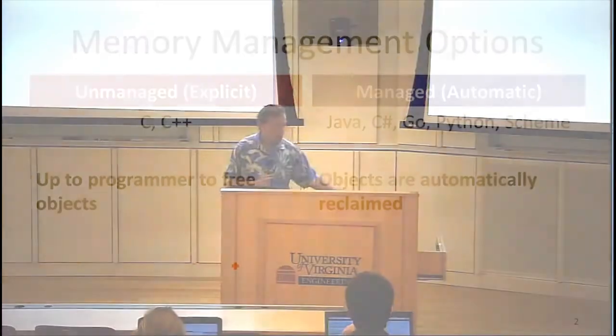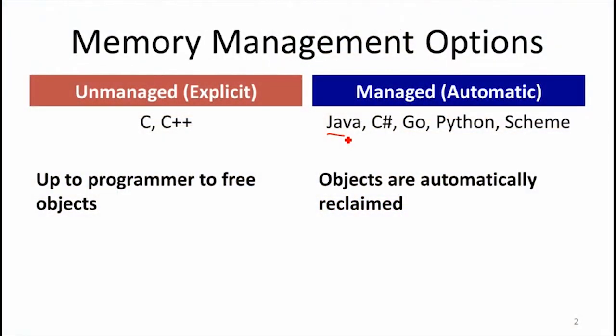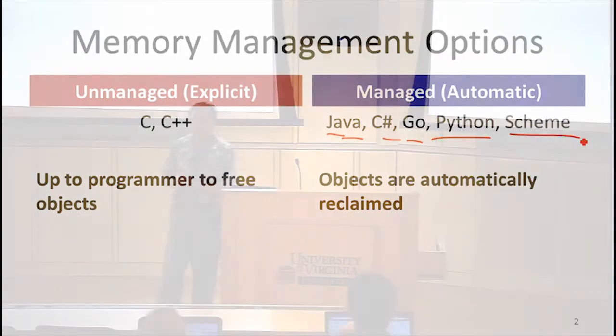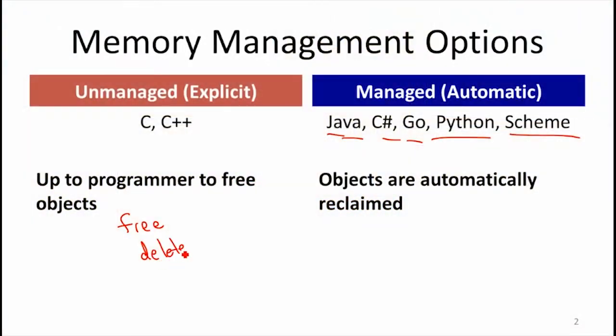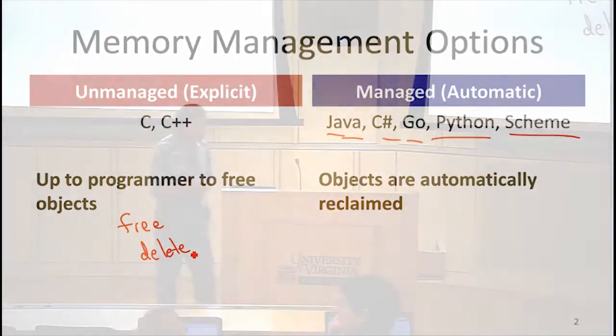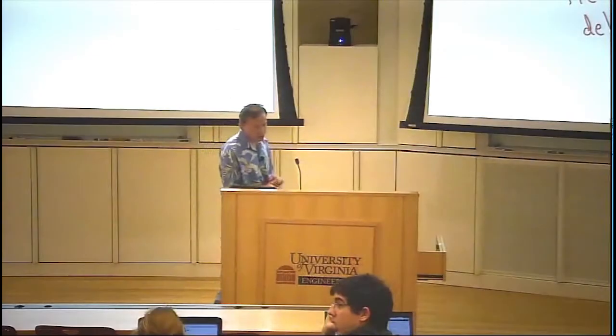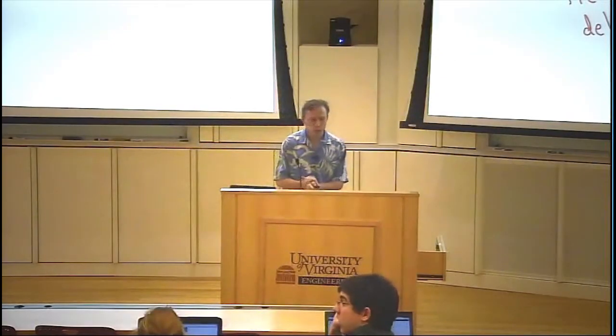You've also programmed in languages that have automatic memory management — Java, Python, Scheme, Go, and C Sharp. All of these automatically reclaim storage. It's not up to the programmer to say when they're done by calling free or delete the way they do in C and C++. It's up to the compiler and the runtime system to reclaim storage, and the way that's done is primarily through garbage collection.